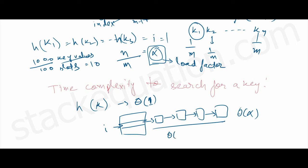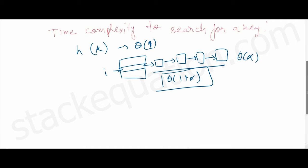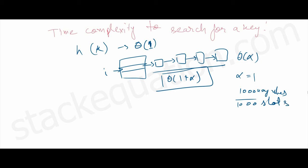In total, the overall time complexity to search for a key in a hash table is Θ(1 + alpha). Now if the load factor is 1 — meaning there are 1000 key values and 1000 slots — the average number of values per slot is 1, so the average linked list length is 1. In that case, alpha becomes 1 and the time complexity to search is O(1).